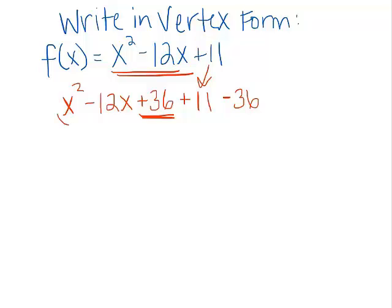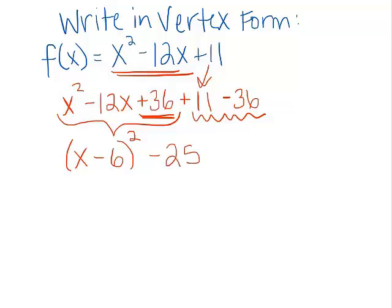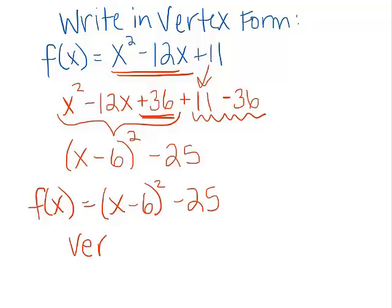Why did we do that? Well, now we have a perfect square trinomial because we completed the square. We can write this as the quantity x minus 6 squared. Now, we just have to simplify these last two terms. 11 minus 36, that would give us negative 25 when we combine those. We did it! That's vertex form. F of x is equal to the quantity x minus 6 squared minus 25. And we can see the vertex is at 6, negative 25. Not so bad, and now we could graph that fairly quickly if we wanted to.